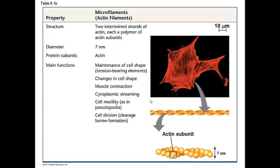Finally we have the microfilaments, which are also known as actin. This is the narrowest of the cytoskeletal polymers, only about 7 nanometers wide. It's involved in cell shape but primarily involved in changes of cell shape — for example it forms the pseudopod that allows some cells or amoeba to move. A pseudopod is a false foot that a cell extends for movement. It's also involved in cytoplasmic streaming in plants as well as muscle contraction, and it helps to form the cleavage furrow in mammalian cells.